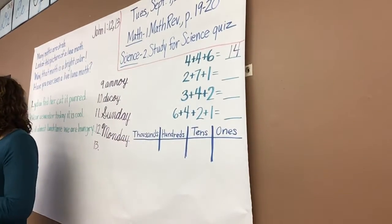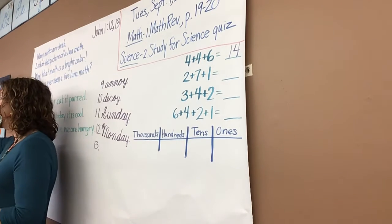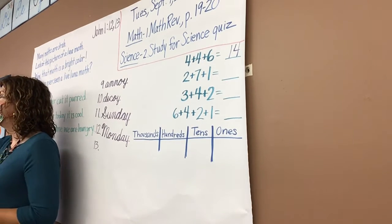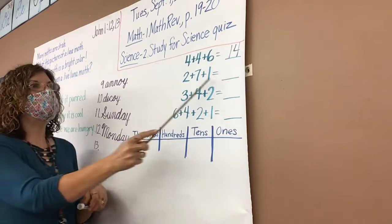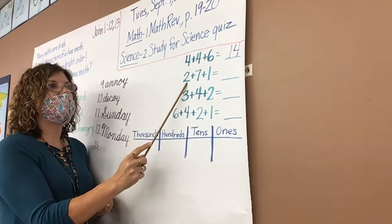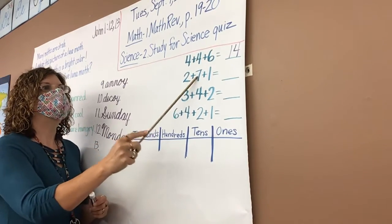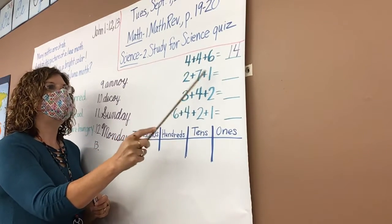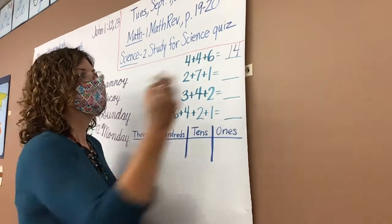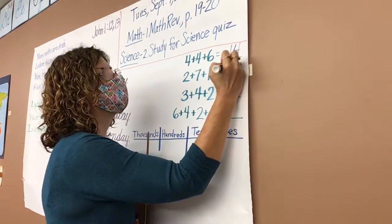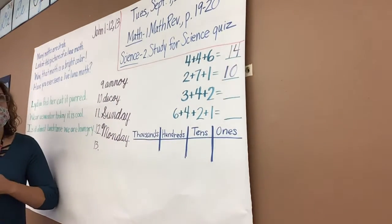Go on to the next one. What strategy or property are we going to use for that one? Two plus seven plus one. What did we learn? Count on by ones and count on by twos. So we could go seven, eight, nine, ten. Count on by ones, count on by twos.